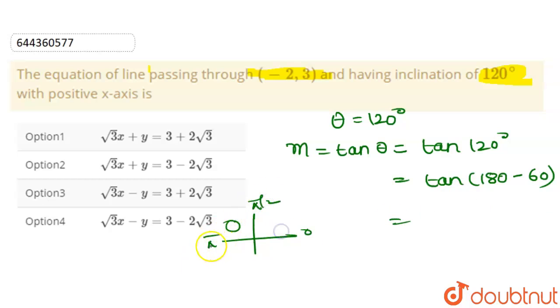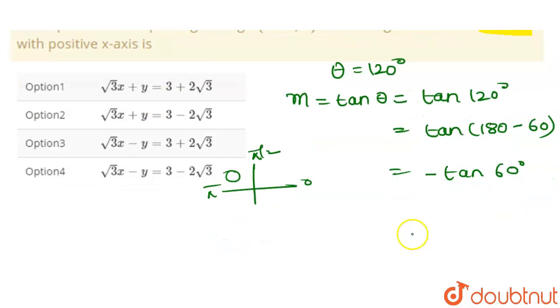So π minus something will lie in the second quadrant, and we know that in second quadrant tan is negative. So we will have minus tan 60, and tan 60 is 1 by root 3—1 and root 3. So slope is minus root 3 for this line, and we have given the passing point as (-2, 3).